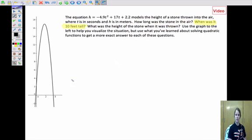Next question asks, when is the stone ten feet tall? So if I look over here, at ten feet off the ground, I can see that I'm going to have two times where this ball is going up, and it hits ten feet, and then when it's coming back down, and it hits ten feet. So we're going to look at the equation negative 4.9t squared plus 17t plus 2.2 equals 10. All right, so then I'm obviously going to have to subtract ten from both sides to find this answer. And again, I'm going to use the quadratic formula. I'll put my work over here.